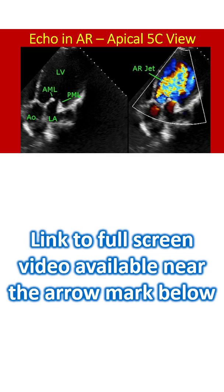Thickening of both aortic and mitral leaflets indicates the possible etiology as rheumatic. Mitral and aortic valves are the most often involved valves in rheumatic heart disease, the former being more common between the two. When there is associated mitral stenosis, the color Doppler jet of mitral flow merges with that of aortic regurgitation in the left ventricle, as both occur in diastole.